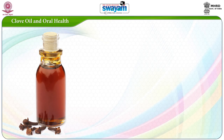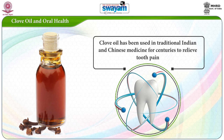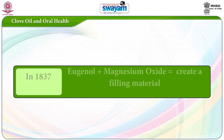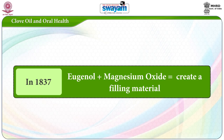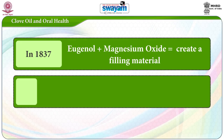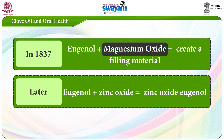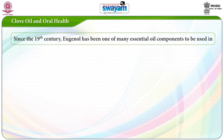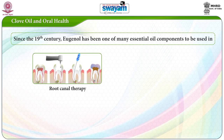Clove oil and oral health. Clove oil has been used in traditional Indian and Chinese medicine for centuries to relieve tooth pain. Clove oil contains eugenol. In 1837, eugenol and magnesium oxide were combined to create a filling material. Later zinc oxide replaced the magnesium oxide to create ZOE (zinc oxide eugenol), which is still widely used as a temporary filling cement. Since the 19th century, eugenol has been one of the many essential oil components to be used in root canal therapy.